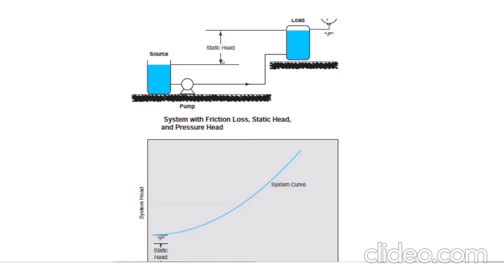The static head is basically a constant head, consisting of the elevational head versus the pumping pressures. The friction losses are variable. We can see the system curve here. This curve does not start from the bottom; there is a static head offsetting it.